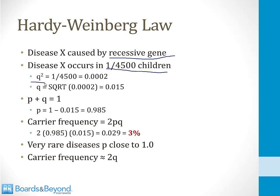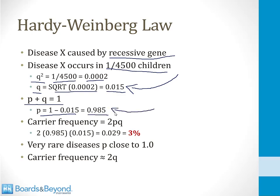This means that we know the value of q squared — q squared is the frequency with which two disease alleles occur together, which is one out of 4500, or 0.0002. From this, we can calculate q: q is the square root of 0.0002, which works out to 0.015. This means that the frequency of the disease allele in this population is 1.5%. We can then easily calculate p, because p plus q equals 1, so p equals 1 minus 0.015, which works out to 0.985 — meaning the frequency of the healthy allele is 98.5%. We can now calculate the carrier frequency using 2pq: 2 times 0.985 times 0.015, which works out to 0.029, or roughly 3%. So we've used an observation about the frequency of sick children to calculate the percentage of carriers in the population through the Hardy-Weinberg law.